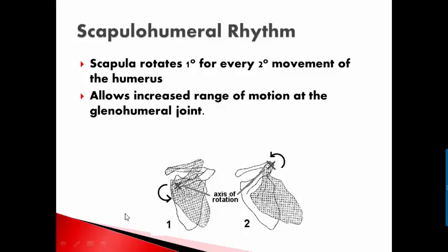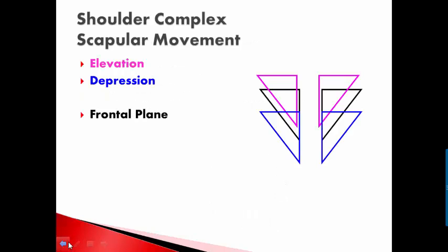So what other motions does our scapula do on our thorax? There are a few movements. One is elevation and depression, and that occurs in the frontal plane. So as you do shrugs in the gym, you're elevating and depressing your scapula.